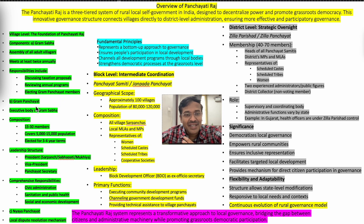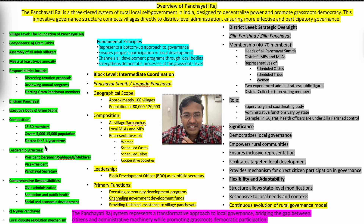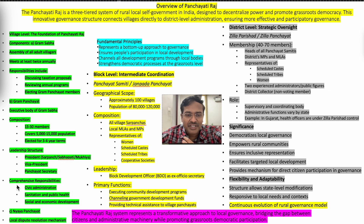The Gram Panchayat is the executive body of the Gram Sabha. It is composed of 15 to 30 members, covers a population of 5,000 to 15,000, and is elected for a three to four year term. The leadership structure includes a president (called Sarpanch, Sabbapati, or Mukya), a vice president, and a panchayat secretary.